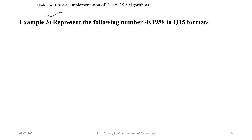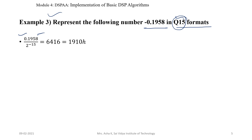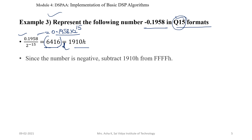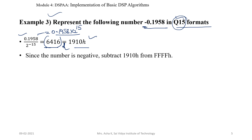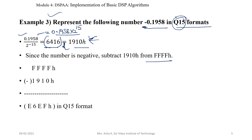Example 3: Represent minus 0.1958 in Q15 format. Consider the whole number 0.1958. Since it is in Q15 representation, divide by 2 to the power minus 15, which is equivalent to multiplying 0.1958 by 2 to the power 15. We get 6416 in decimal. Convert that into hexadecimal and we get 1910 hexadecimal. Since the given number is negative, subtract 1910 hexadecimal from FFFF hexadecimal, and we get E6EF hexadecimal.